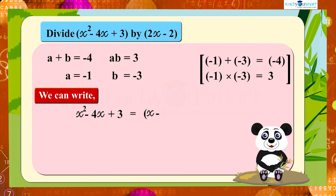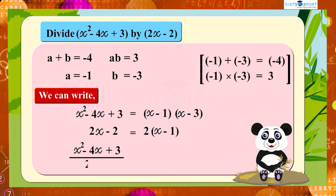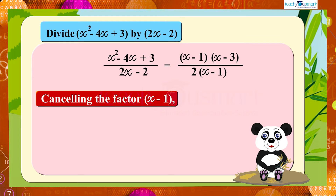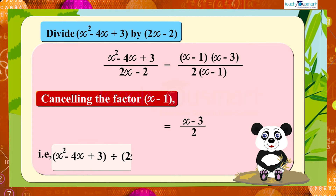Therefore, x² − 4x + 3 can be written as (x − 1)(x − 3). Also, 2x − 2 can be written as 2(x − 1). Then x² − 4x + 3 divided by 2x − 2 equals (x − 1)(x − 3) divided by 2(x − 1). Cancelling the factor (x − 1), we get (x − 3)/2. That is, x² − 4x + 3 divided by 2x − 2 gives (x − 3)/2.